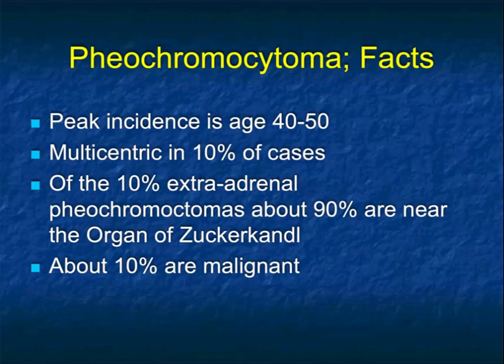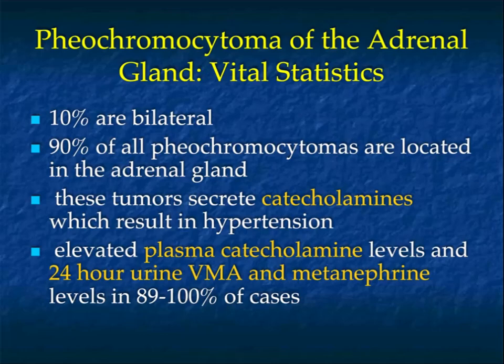Looking at the facts of pheochromocytoma: peak incidence is age 40 to 50. Multiple pheos occur about 10% of the time. We talk about the rule of 10: 10% are extraadrenal, with about 90% of those near the organ of Zuckerkandl. About 10% of pheos are malignant, 10% are bilateral, and 10% are extraadrenal.